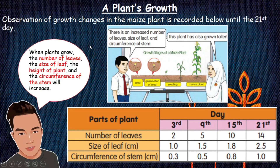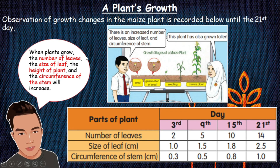So what can we conclude here? When plants grow, the number of leaves, the size of leaves, the height of plant, and the circumference of the stem will increase. This is the conclusion of this observation. When plants grow, the number of leaves, the size of leaves, the height of plant, and the circumference of the stem will increase. I hope that makes sense to you.